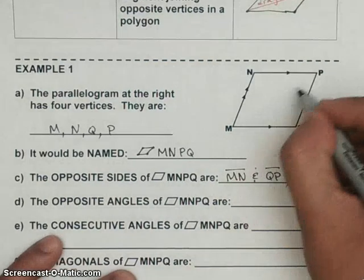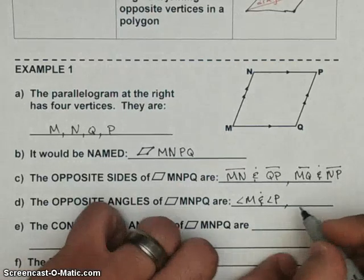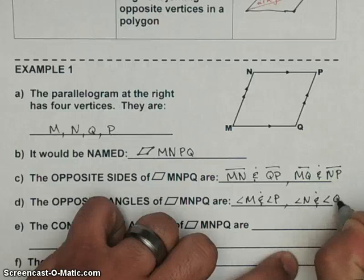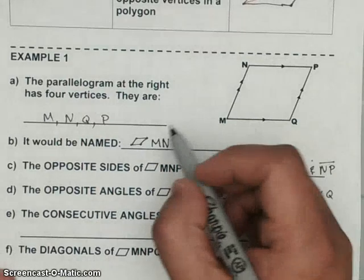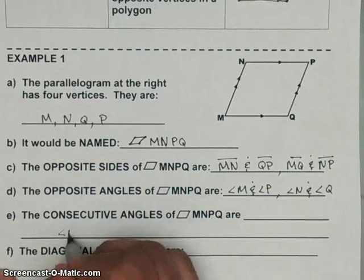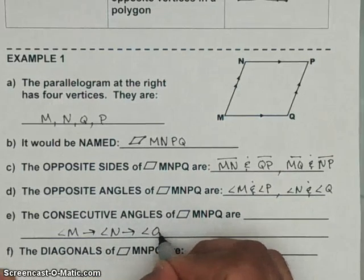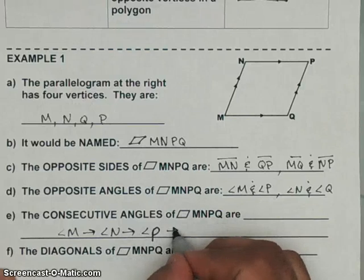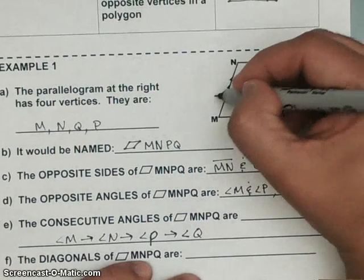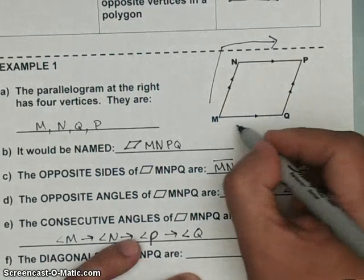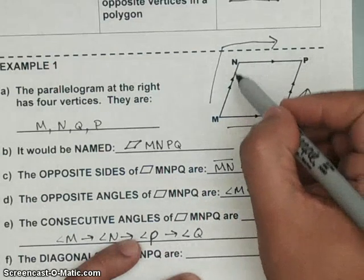The opposite angles are the ones across from each other, so that would be angle M, angle P and angle N, angle Q. Consecutive angles are the ones next to each other. So going consecutively, we'd say angle M, angle N, and then angle P, angle Q. You can go whichever direction you want — around the shape this way or that way — as long as you go continuously all the way around.